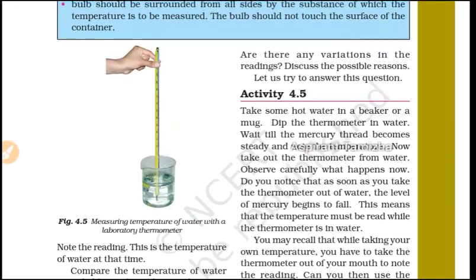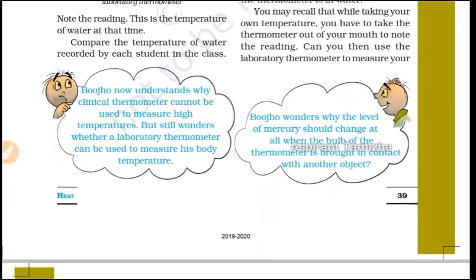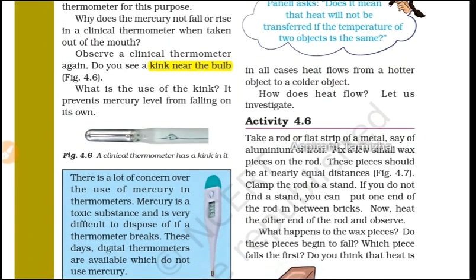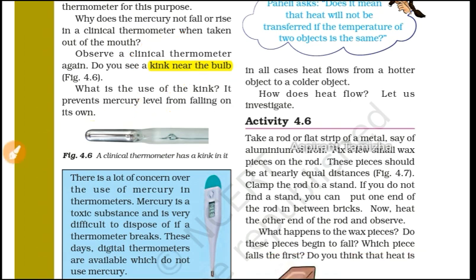From the exam point of view, the clinical thermometer is used for the human body. There is a kink near the bulb of the clinical thermometer. That kink prevents the fall of mercury, which is an important feature.